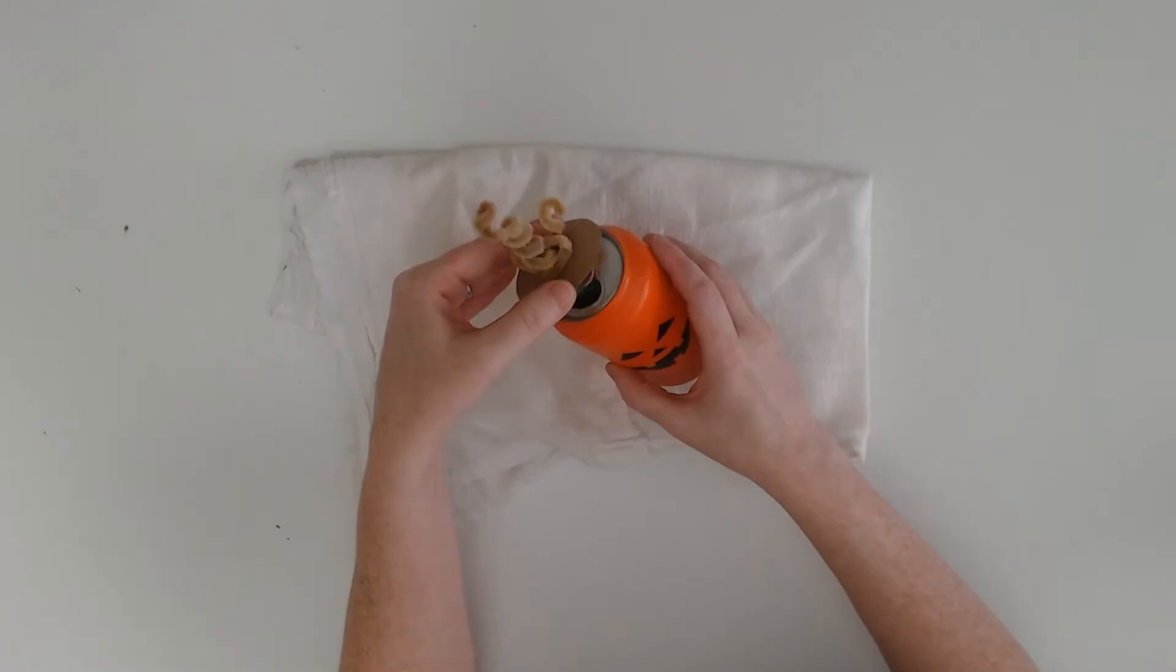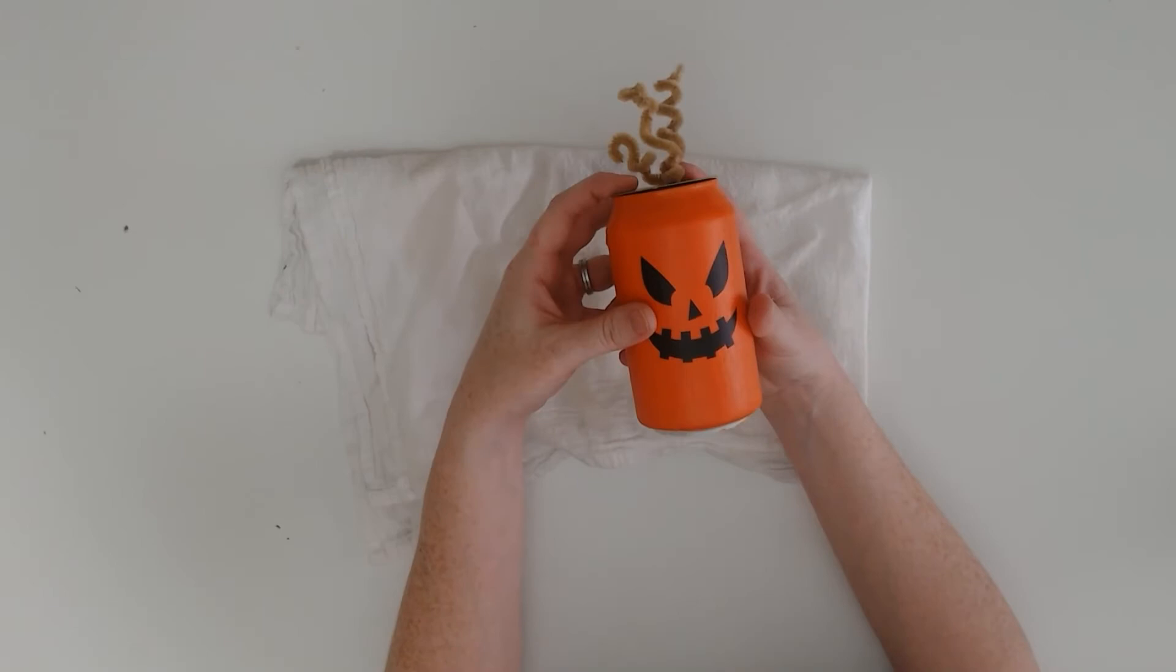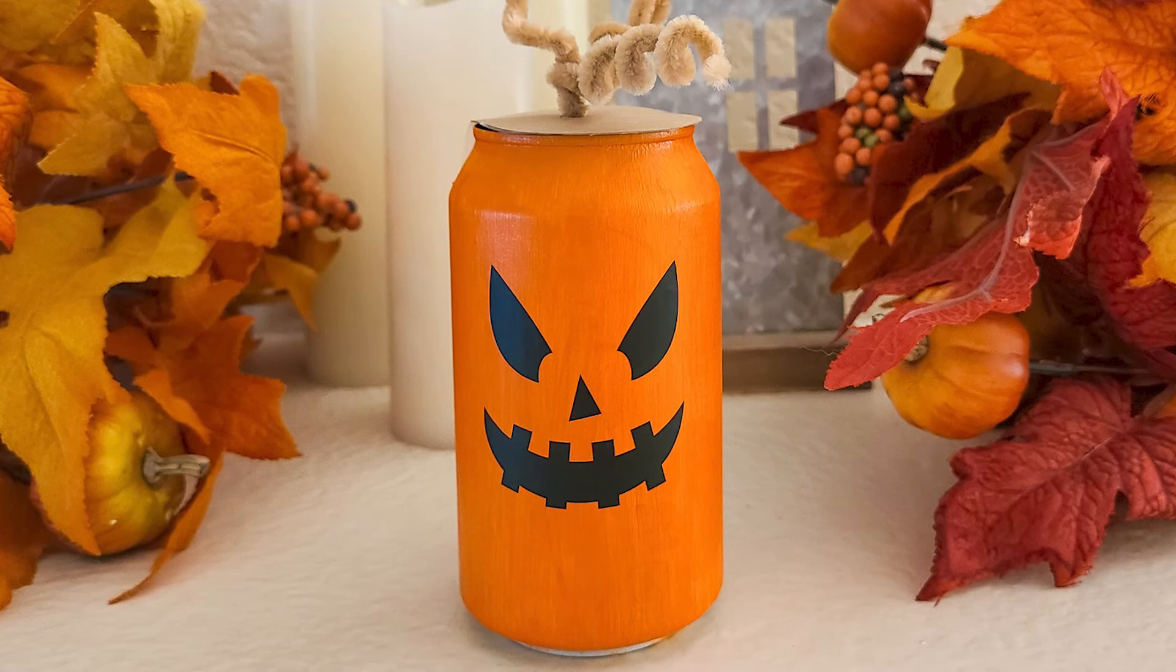So there you have it, folks. These projects are just inspiration. Take a look at what you have in your home and think about what you and your kids could upcycle. The jack-o'-lantern faces that we use in these projects come from the kids fall and winter bundle at So Fancy.